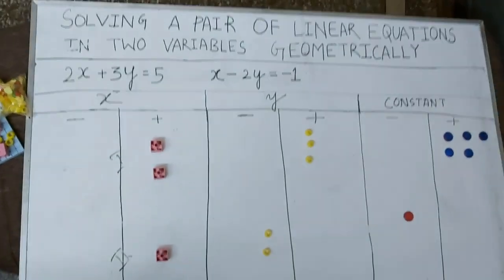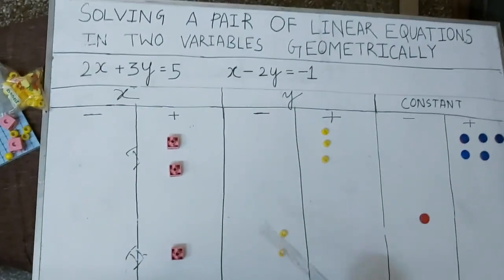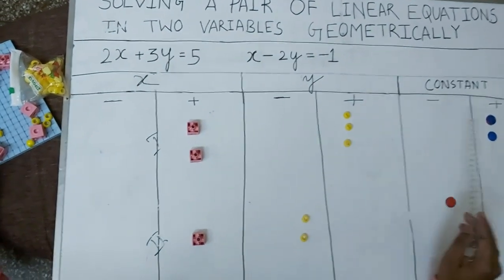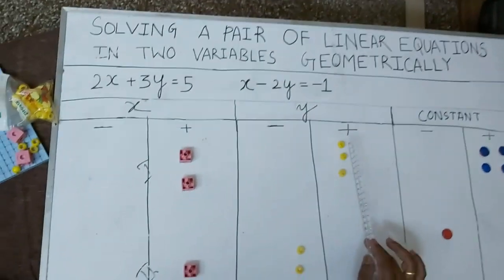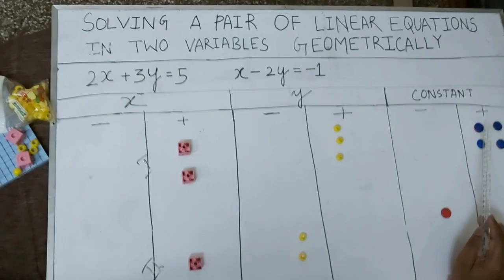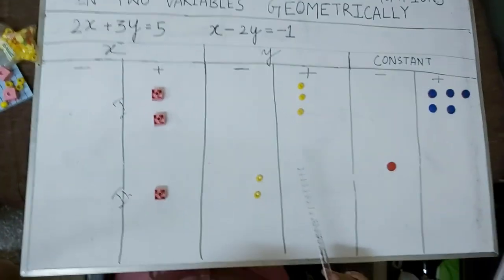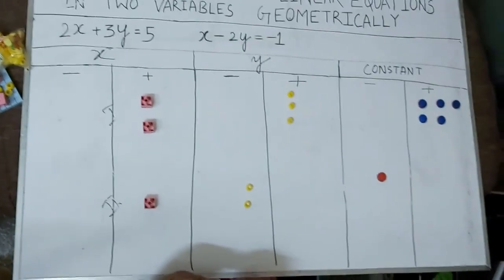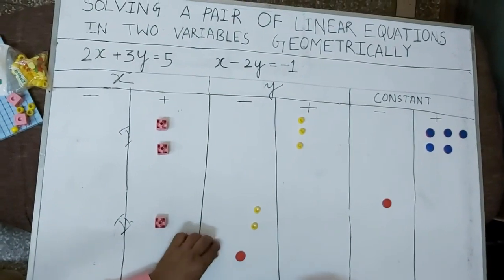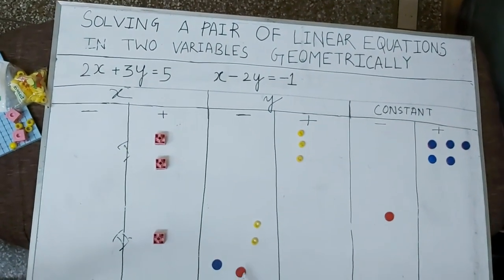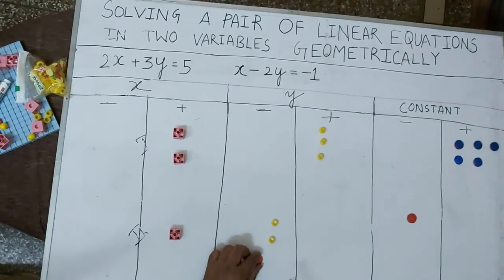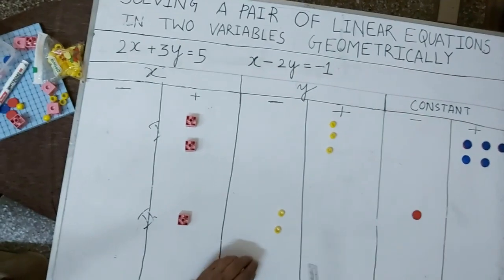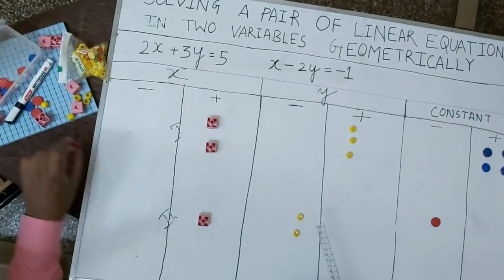Here I have taken some cubes, some beads, and some coins. Each cube represents x, each yellow bead represents y, each blue coin is positive, and each red coin is negative. A blue coin and a red coin together — plus one and minus one — if they are clubbed together, their net value becomes zero. This we are supposed to keep in mind.